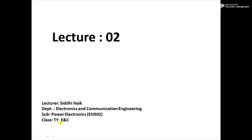Hi all, welcome to the second lecture of power electronics. From here onwards we are starting with our actual syllabus — Unit 1, which consists of SCR, UJT, and PUT. We are starting with SCR.